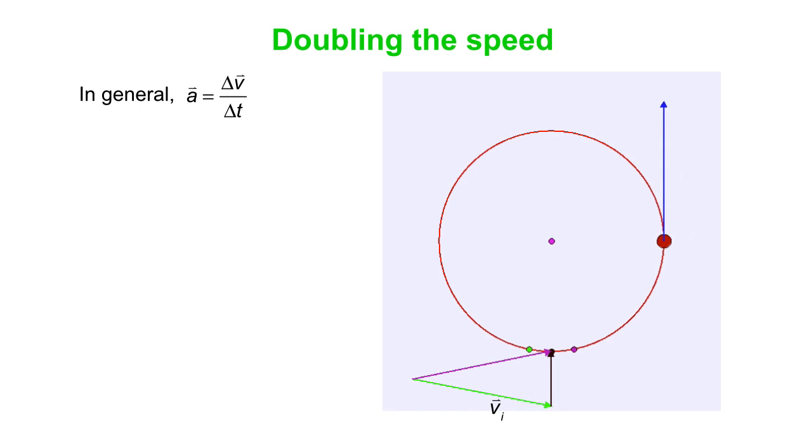What else does it depend on? So let's try this vector construction again, and we will double the speed. So now our vector triangle is twice the size as it was before. All sides are scaled up by a factor of two. Okay, so delta V is now twice as big.